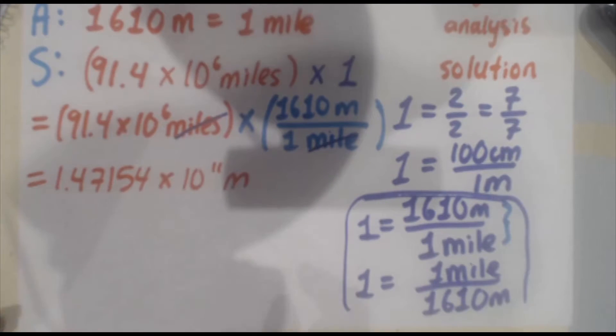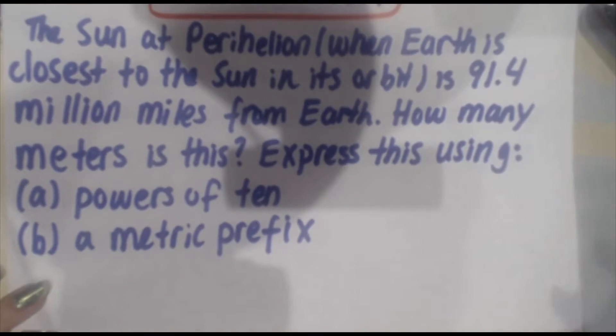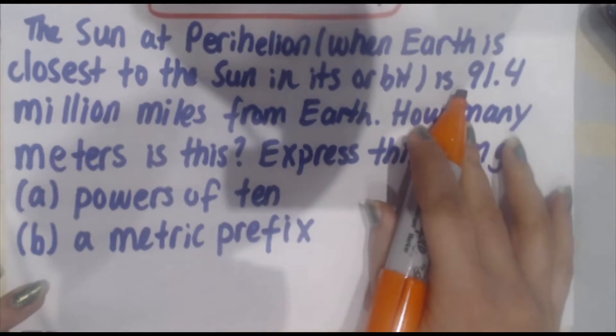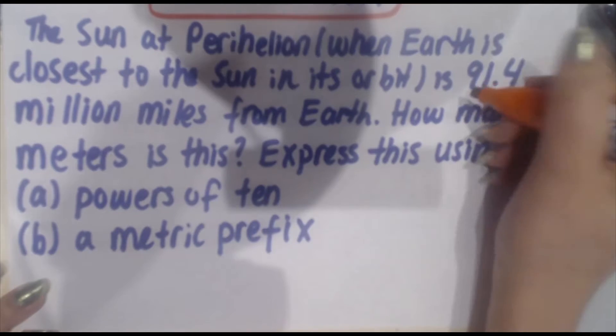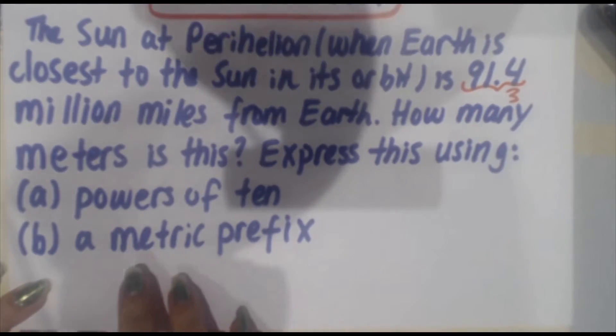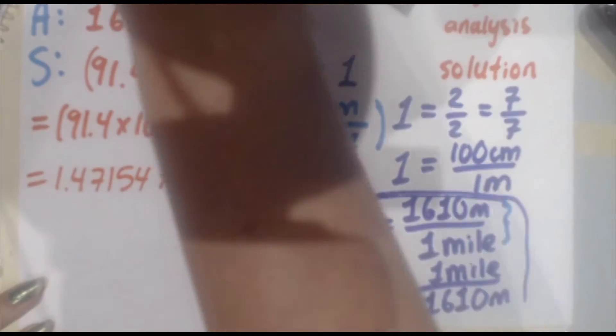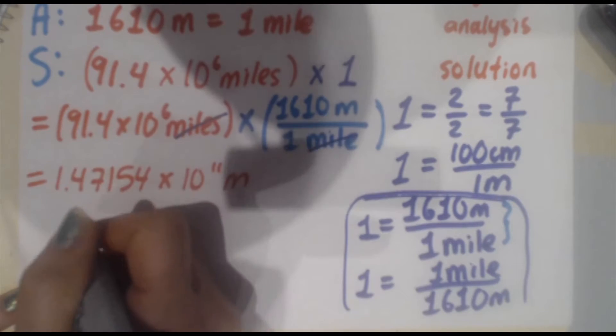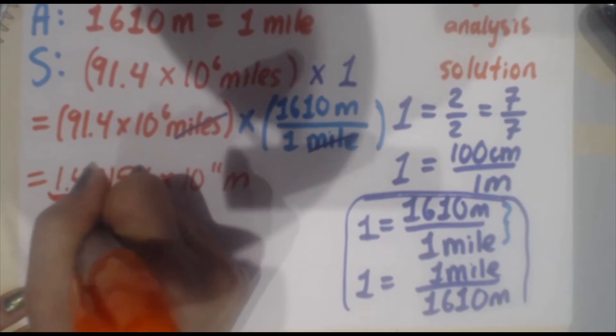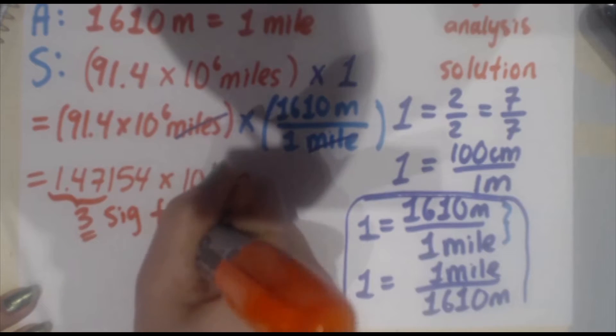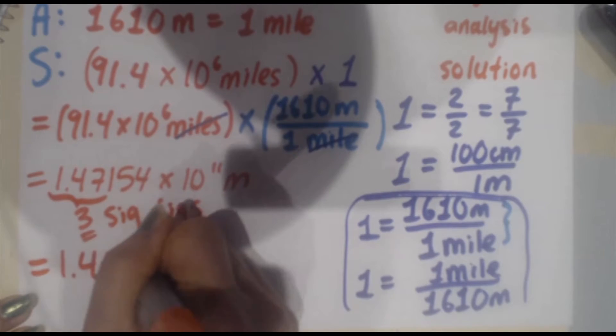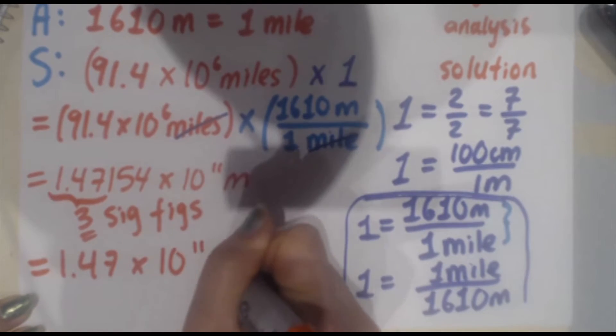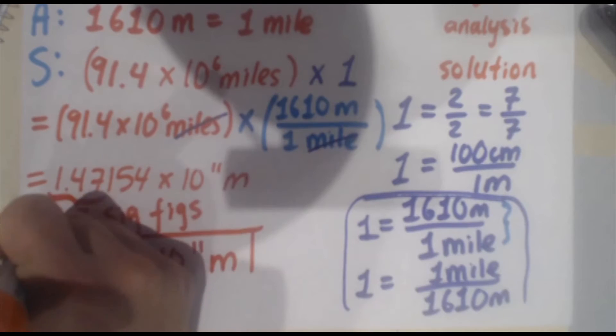Now again, you have the number, but you're not quite done at this point. Go back to the original question. Remember, we can only give the answer to the accuracy of what was given to us in the problem. We're given 3 sig figs in the original problem. Therefore, our answer must also have 3 sig figs. If we round this to 3 sig figs, we're going to be left with simply 1.47 times 10 to the 11 meters. Do not drop your units.